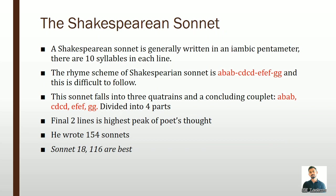The Shakespearean sonnet is generally written in iambic pentameter with 10 syllables in each line. Its rhyme scheme is a b a b c d c d e f e f g g. The sonnet falls into three quatrains and a concluding couplet — four parts in total, whereas the Italian format has three parts. The final two lines represent the highest peak of the poet's thought. In total, Shakespeare wrote 154 sonnets, among which Sonnet 18 and Sonnet 116 are considered the best.